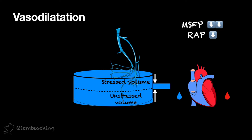Firstly, it doesn't treat the cause. And secondly, because of the vasodilatation, the veins lose their tone. If you put more volume in them, they'll just dilate more, making little difference to the stressed volume. We can see this happening in clinical practice when we give someone a spinal anaesthetic and their blood pressure drops. Giving a fluid bolus has little effect on the hypotension. And thirdly, once the disease resolves, the patient will be significantly fluid overloaded.